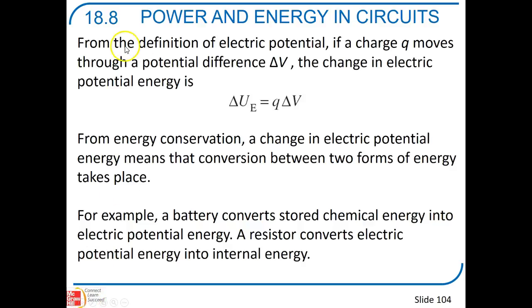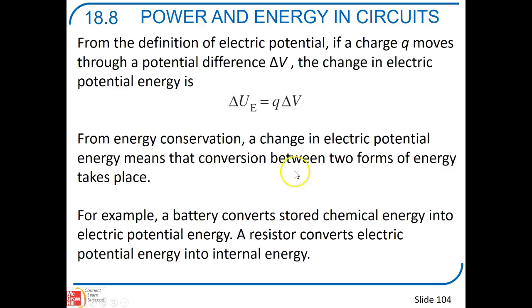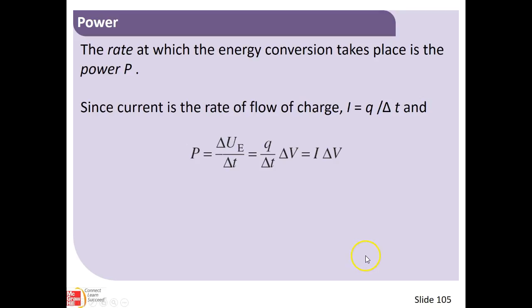Let's talk about 18.8, which is all about power and energy in circuits — a pretty important topic. From electric potential, if charge moves through a potential difference ΔV, the change in electric potential energy UE equals Q·ΔV. Remember, this is different from a capacitor. From energy conservation, that change in electric potential energy means a conversion between two forms of energy. A battery converts chemical energy into electric potential. A resistor converts electric energy into internal energy — those little resistors actually get warm because they're resisting the flow of electrons.